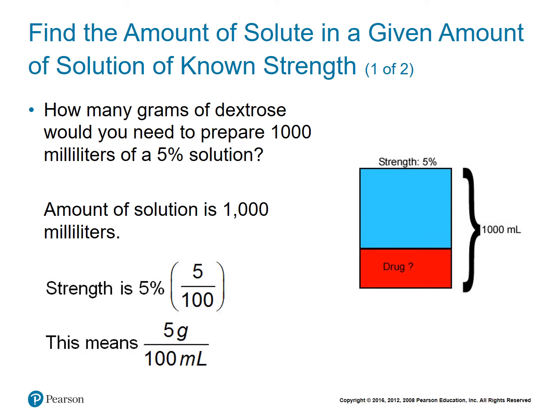How many grams of dextrose would you need to prepare 1000 milliliters of a 5% solution? This is different because we don't know the amount of the drug — we're given the strength and the solution amount, so we need to find the amount of solute. 1000 milliliters is given for the solution. The 5% represents the strength. Writing 5% as a fraction, since percent means out of 100, gives us 5 over 100 — or five grams for every 100 milliliters, since dextrose is a dry measure.